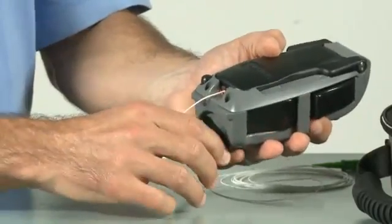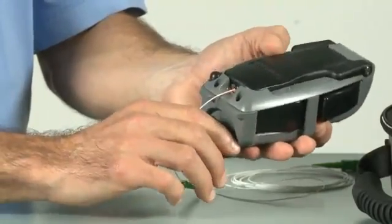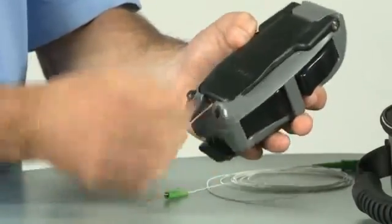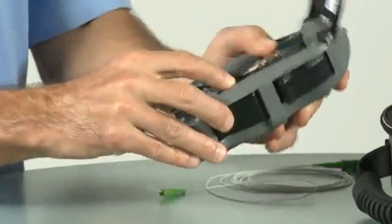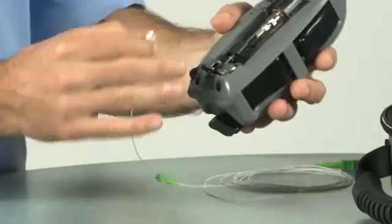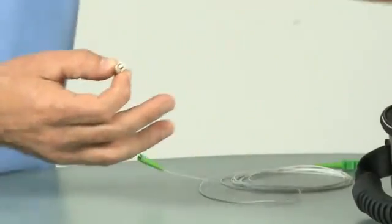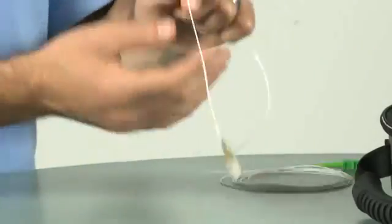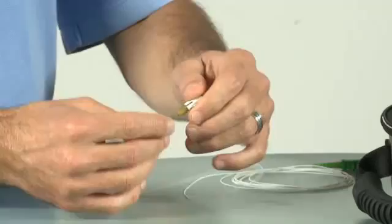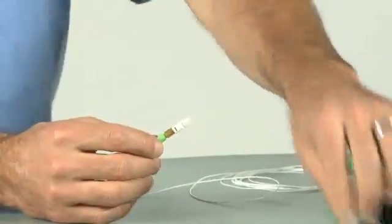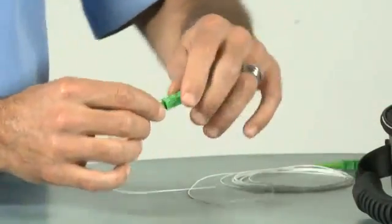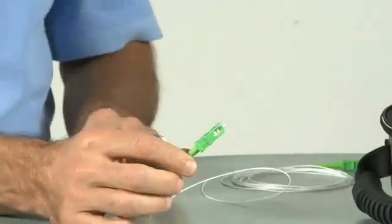The last piece is a mechanical crimp that happens on the back of the connector. A twist of that knob activates that. Then the operator simply unloads the tool from the top, places the installation tool back into the tool kit, they slide the boot into place, and the shroud goes on, and you've completed your termination.